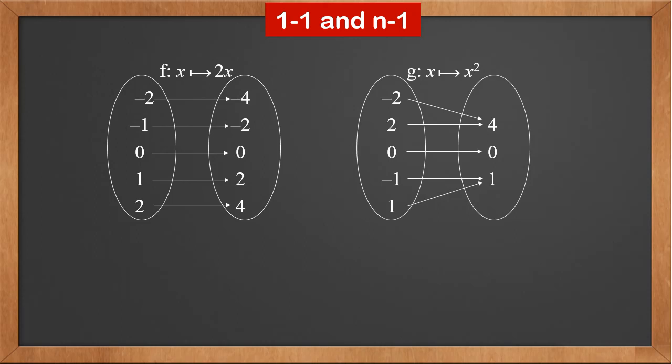Let's look at two different functions, f and g. f maps x to 2x. g maps x to x squared. We can see in f, each x is mapped to a different y. But in g, both minus 2 and 2 are mapped to 4, and both minus 1 and 1 are mapped to 1. g is still a function because each member in x is mapped to exactly one member in y. It's just that multiple x values can be mapped to a same value in y. Function f is called a 1 to 1 function. Function g is called a many to 1 function.